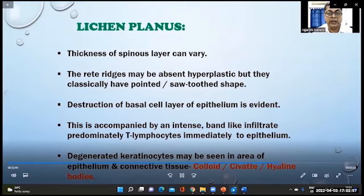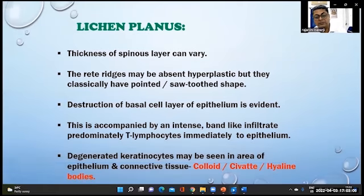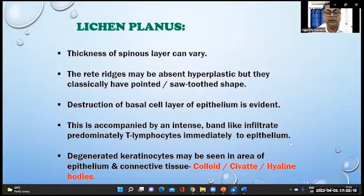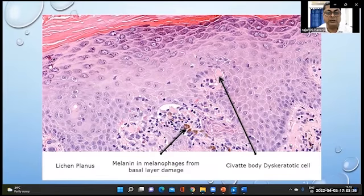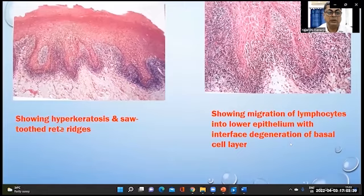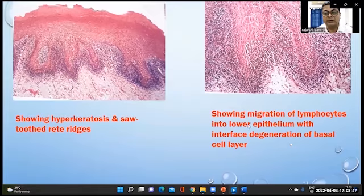In lichen planus, the thickness of the spinous layer can vary. The rete ridges may be absent or hyperplastic but classically have a pointed saw-tooth shape. There is destruction of the basal layer of epithelium, accompanied by an intense band-like infiltrate predominantly of lymphocytes immediately below the epithelium. The presence of Civatte hyaline bodies — degenerated keratinocytes — is a characteristic feature. This histologic picture shows the Civatte bodies and the features of lichen planus.